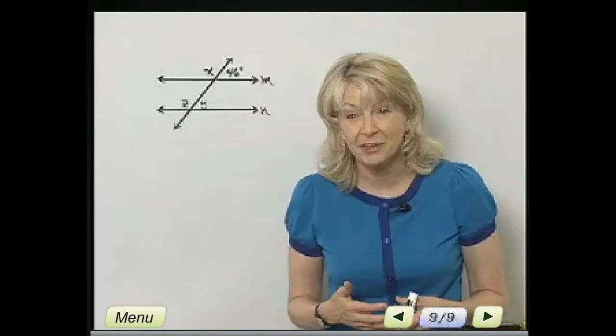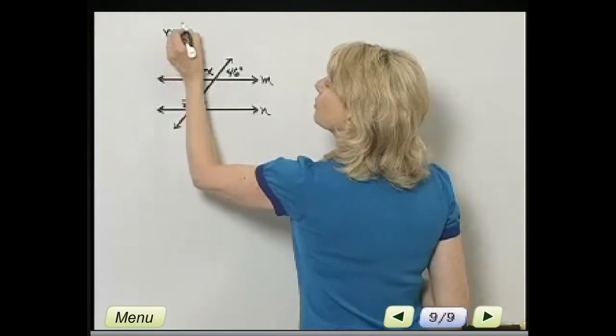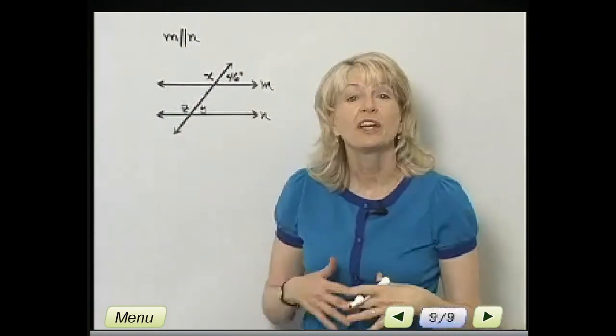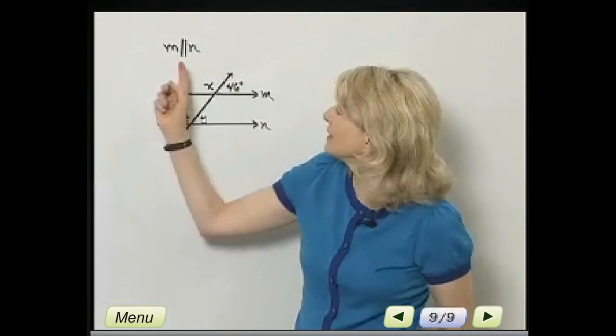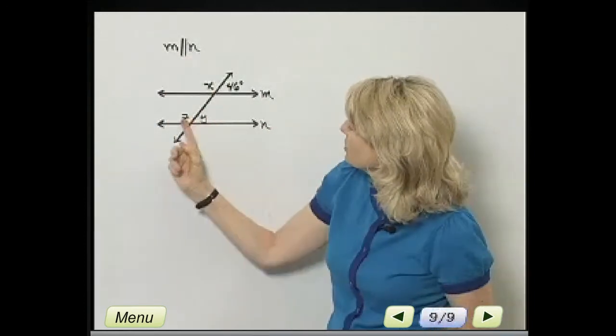Let's talk about corresponding angles and alternate interior angles as we look at this figure. And we are given that, I'll write it in symbols. What does that mean? We are given that this line and this line are parallel. Line M is parallel to line N. I want to find the measure of angle X, the measure of angle Z, and the measure of angle Y.